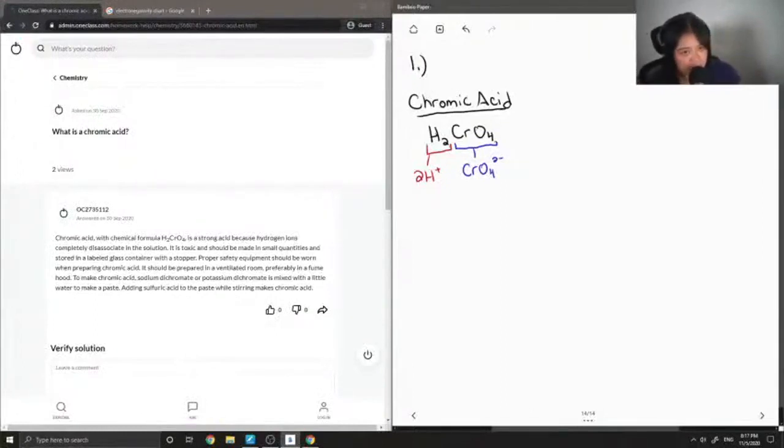So let me just write out its structure right down here. There's a double-bonded oxygen on the chromate or the chromium, and there's a second one at the bottom here. There's an OH group and another OH group on the left side. Yeah, that's all there is to it. Let's see what our answer said.